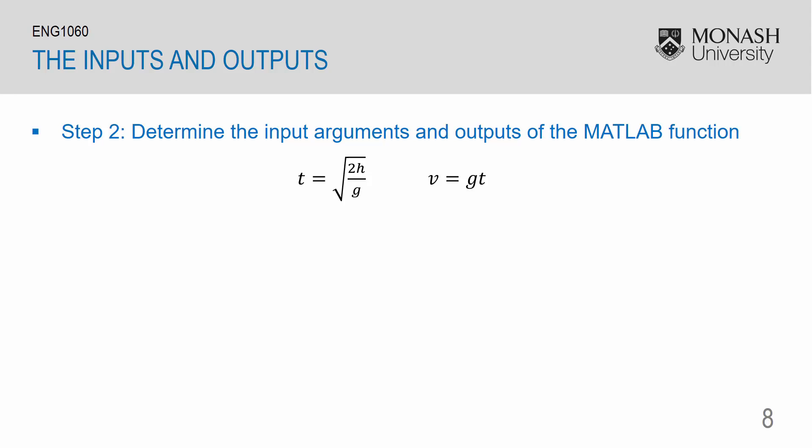The next step is then to determine which variables are the input arguments and which variables are the output arguments. V is the falling velocity. And since this is what we're after, it should be an output. T is the falling time, which again, is what we're interested in. So this is also an output. H is the height of the conveyor belt, which we can set, so therefore it is an input. And G, which is neither an input or an output. Since for our applications, we expect the gravity not to change, we can treat it as a constant defined within the function file itself.